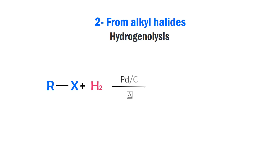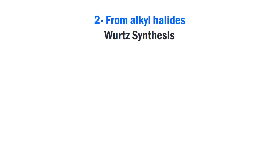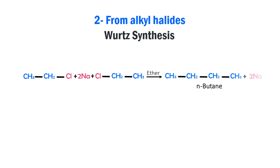The method using palladium on charcoal is known as hydrogenolysis. In this reaction, hydrogenation is accompanied by bond cleavage. Alkyl halides also react with sodium in ether solvent to give alkanes in what is known as the Wurtz reaction. This reaction is particularly useful for the preparation of symmetrical alkanes.